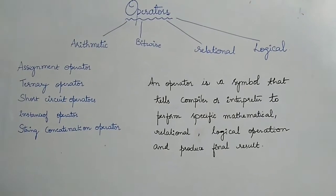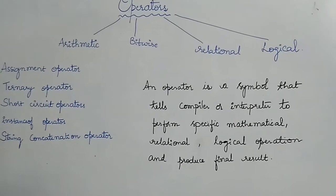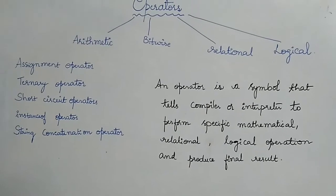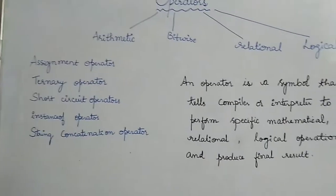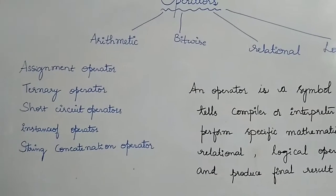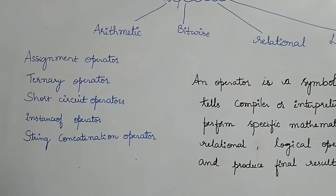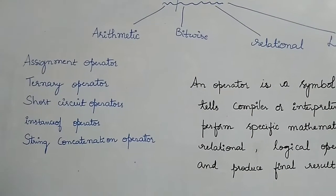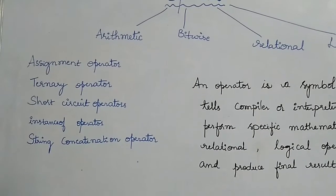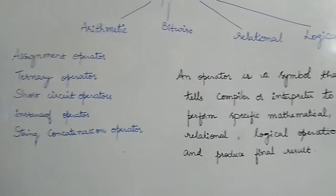The operators are mainly grouped into four types: the first is arithmetic, the second is bitwise, the third is relational, and the fourth is logical. Apart from these four major groups, there are some other operators used in programming: assignment operator, ternary operator, short circuit operators, instance of operator, and string concatenation operator. The instance of operator will be discussed after we cover classes and objects. The rest of the operators you will see in this video.